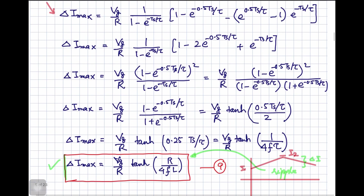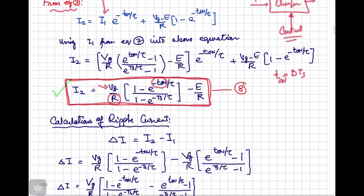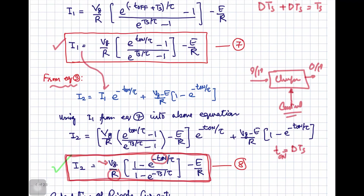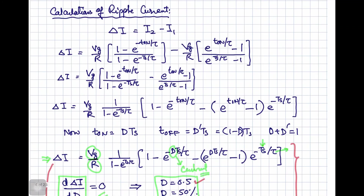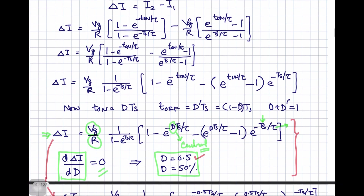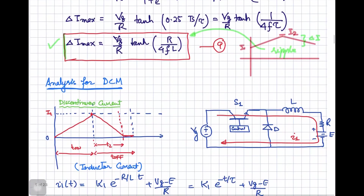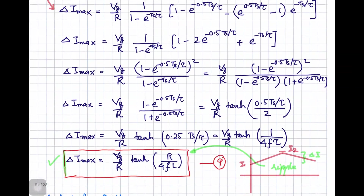For the continuous conduction mode, we have seen how to represent the current in the ON state and OFF state, and derived expressions for I2 and I1 — the maximum and minimum inductor currents — and calculated the ripple current. This procedure will be very useful when we later discuss the buck converter, boost converter, buck-boost converter, and Cuk converter. In the next video, we will go through detailed analysis in the discontinuous conduction mode. This video is dedicated to the continuous conduction mode.